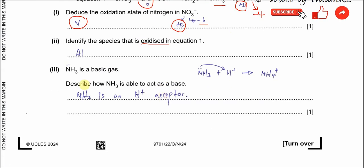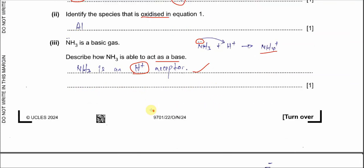Part B3: Ammonia is a basic gas. Describe how ammonia is able to act as a base. A base is always a proton acceptor. Ammonia will use its lone pair to form a dative bond with H⁺ (the hydrogen ion) to form ammonium. This is the basicity of ammonia — it acts as a proton acceptor.